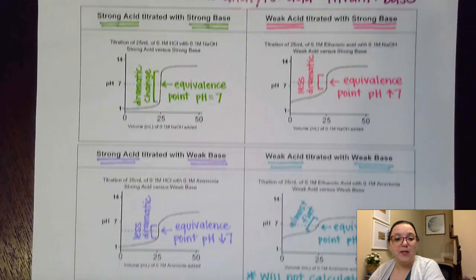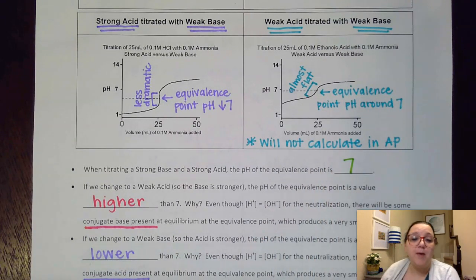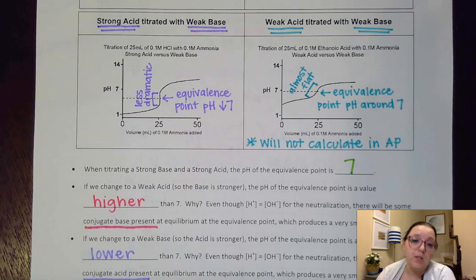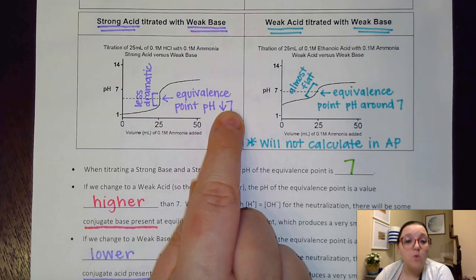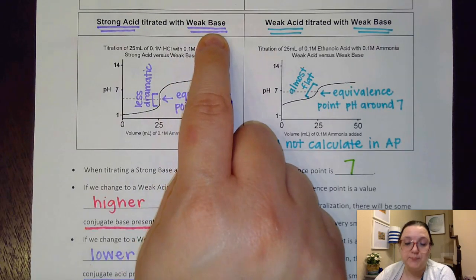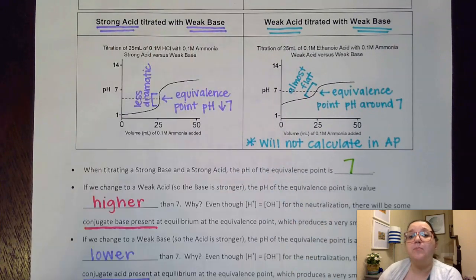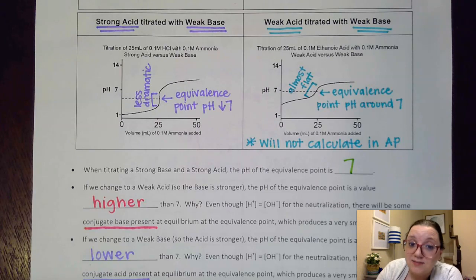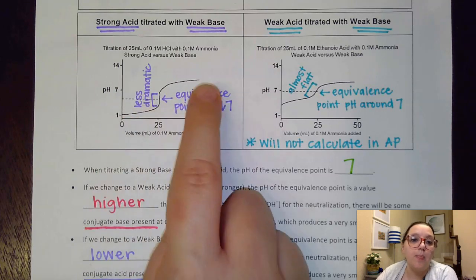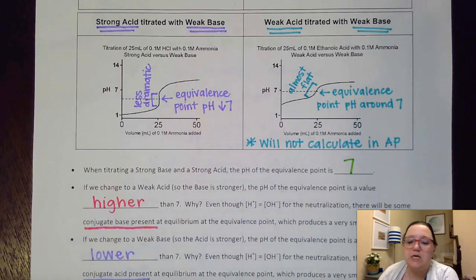Now let's flip the tables and talk about a strong acid with a weak base. Again, we see that less dramatic increase of pH around the equivalence point. We also notice an equivalence point that's below 7. That has to do with a conjugate partner — when I have a weak base, at equilibrium these two cancel each other out, but there will be some conjugate acid of the weak base still remaining, and that conjugate acid is what causes that pH to be lower than 7. Notice that while on the acid end of things your pH is extreme, on the base end we're nowhere near 14, which would be an indication that you might have a weak base present.